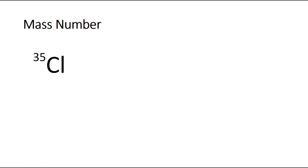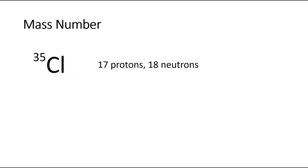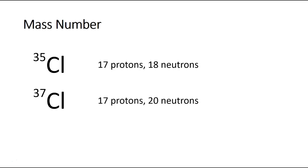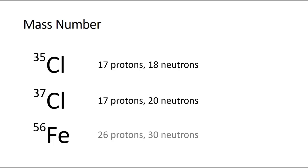Here's an example: chlorine-35. How many protons, how many neutrons? It's chlorine, so it has 17 protons — you look that up on your periodic table. Because it has a mass of 35, the number of neutrons is A minus P: 35 minus 17 equals 18. So that chlorine atom has 17 protons and 18 neutrons. Here's chlorine-37, the other common isotope of chlorine — again, because it's chlorine it has 17 protons, and because its mass is 37, it's going to have 20 neutrons. Here's an iron-56 atom: iron is element 26, so it's got 26 protons, and 56 minus 26 gives 30 neutrons.